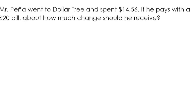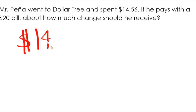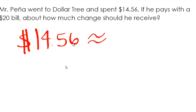Here's another example. Now we're going to work with differences. Mr. Peña went to Dollar Tree and spent $14.56. If he pays with a $20.00 bill, about how much change should he receive? So Mr. Peña spent $14.56 at Dollar Tree, and we're trying to find out how much change he gets paying with a $20.00 bill. So is $14.56 closer to $14.00 or closer to $15.00? Since $0.56 is way closer to $15.00, he spent about $15.00 at Dollar Tree.